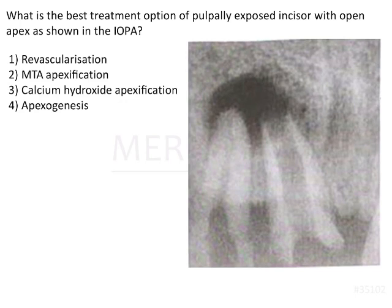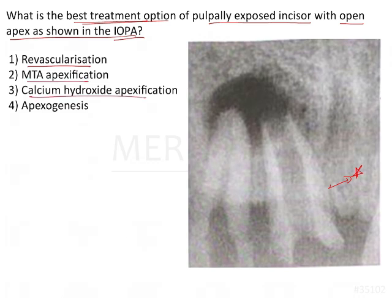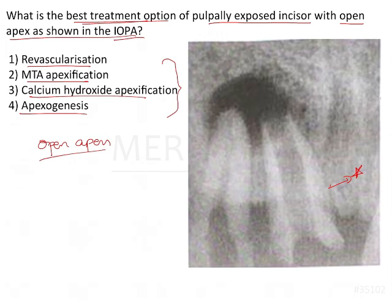In this question we have been asked what is the best treatment option for a pulpally exposed incisor with an open apex as shown in the IOPM. The options given are revascularization, MTA apexification, calcium hydroxide apexification, or apexogenesis. All of these treatment options are procedures done in cases of open apex as we can see in the image. So how do we decide which treatment option is the best?